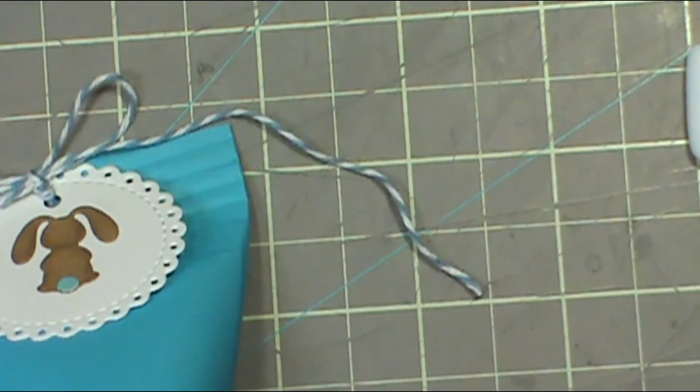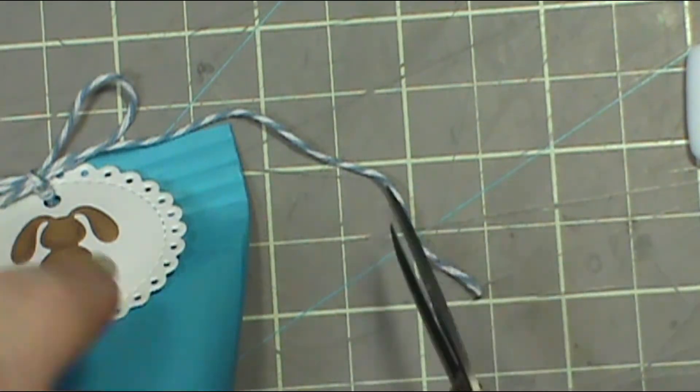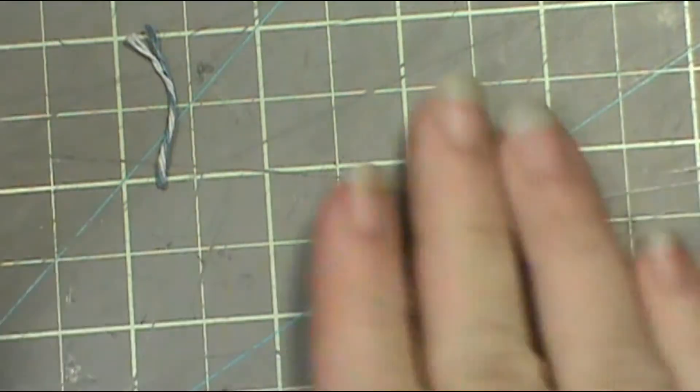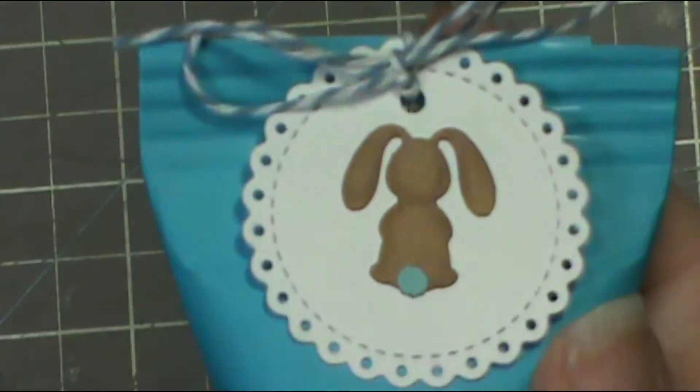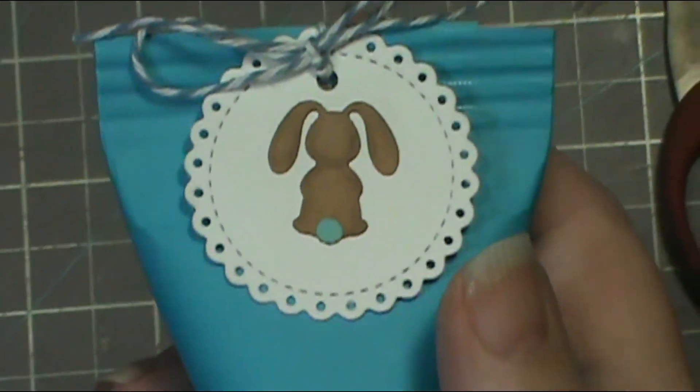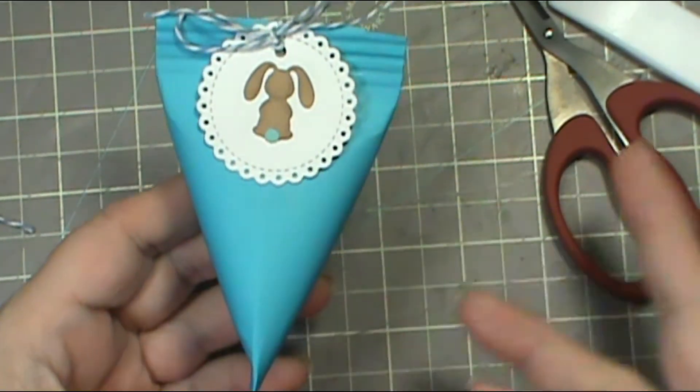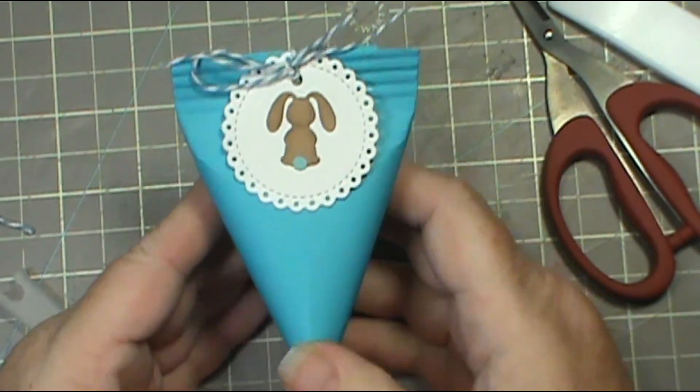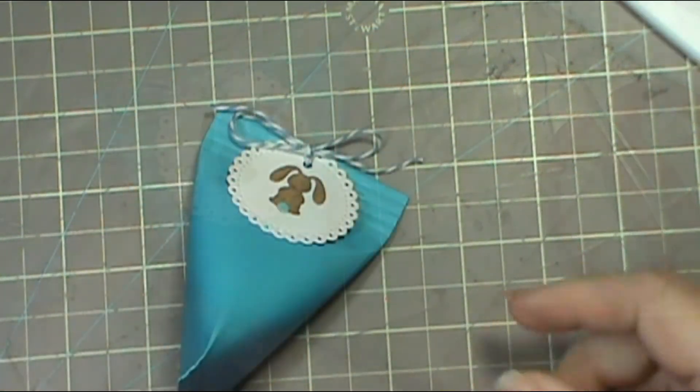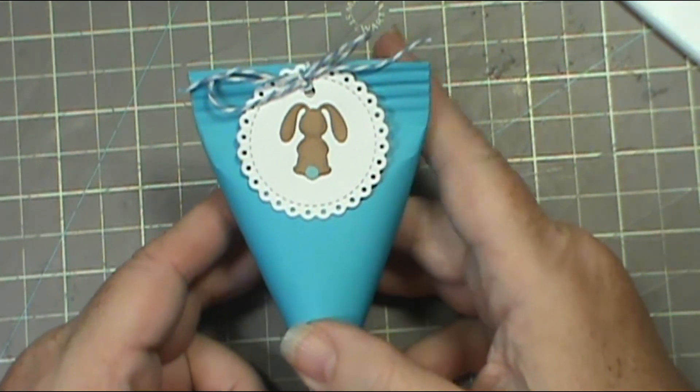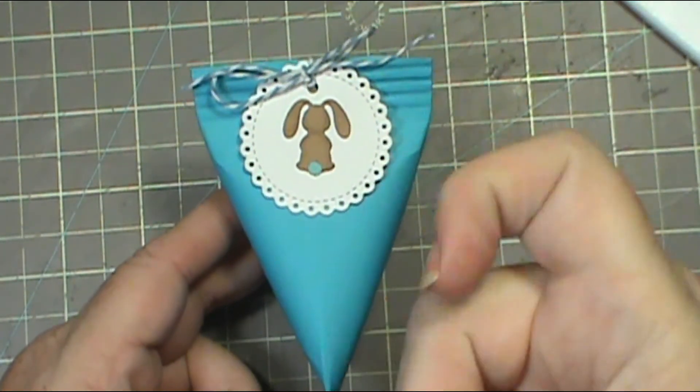Then I just take my scissors and trim off the edges to the length I want. There we go, there is our sour cream container, super quick and easy. I was able to make several of these in an afternoon. I made 22 of them this afternoon. Remember to practice your CPR: Craft Pray Repeat. Thanks for visiting me today and happy crafting. I love you all, bye!